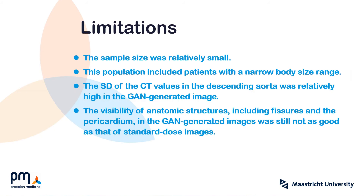Our study has several limitations. Firstly, the sample size was relatively small. Secondly, this population only included patients with a narrow body size range. Thirdly, the standard deviation of the CT values in the descending aorta was relatively high in the GAN-generated images. Finally, the visibility of anatomic structures including fissures and the pericardium in the GAN-generated images was still not as good as that of standard CT images.